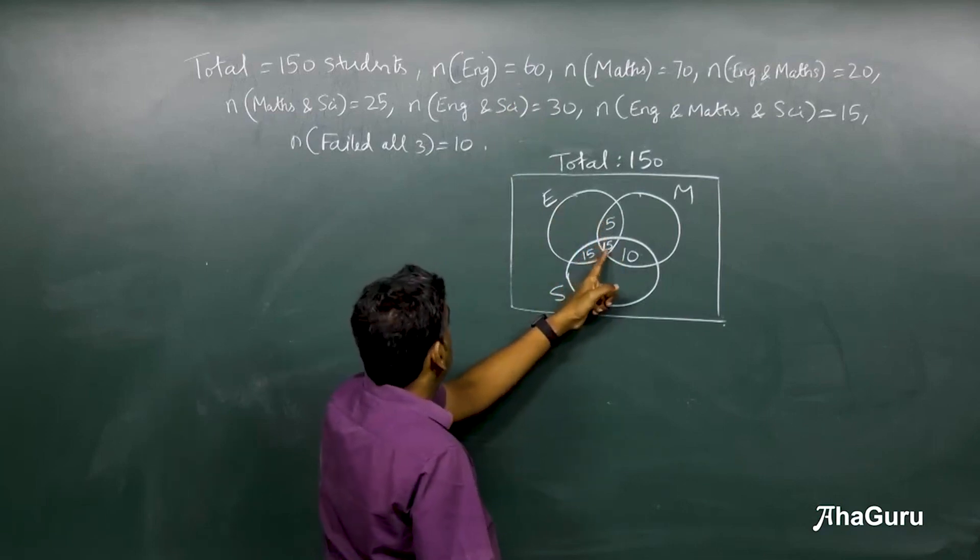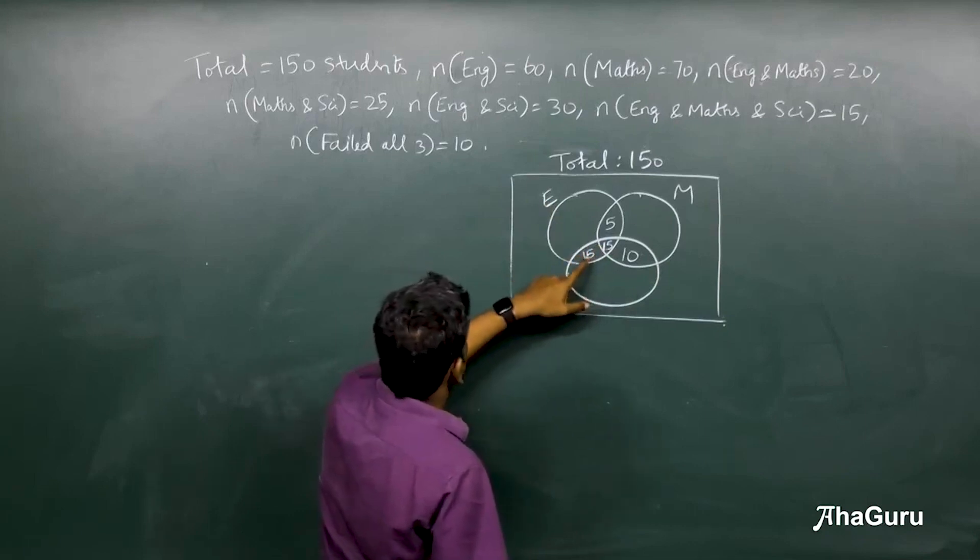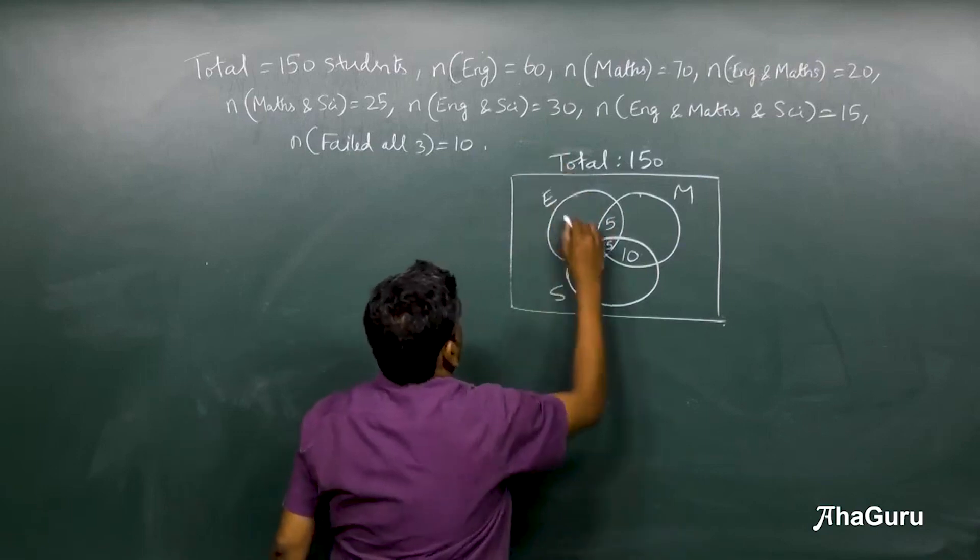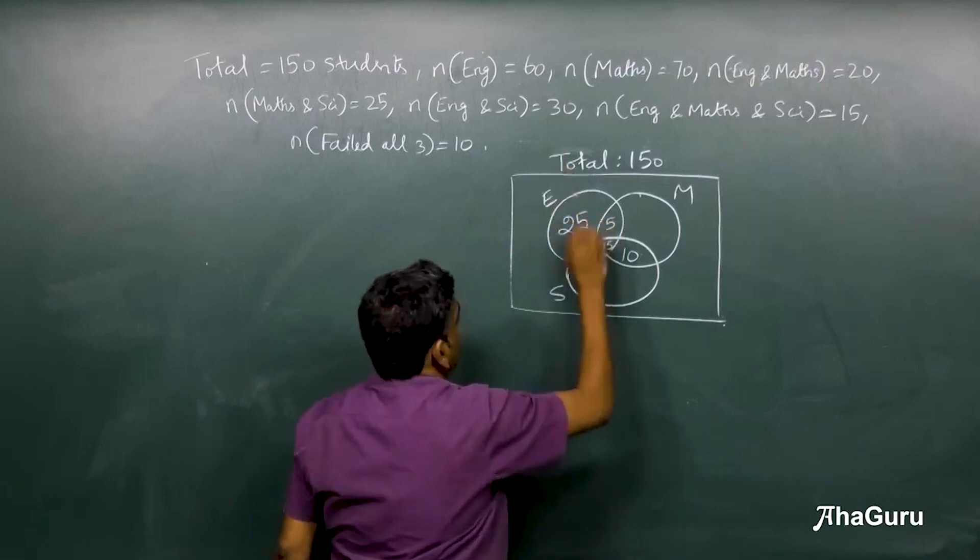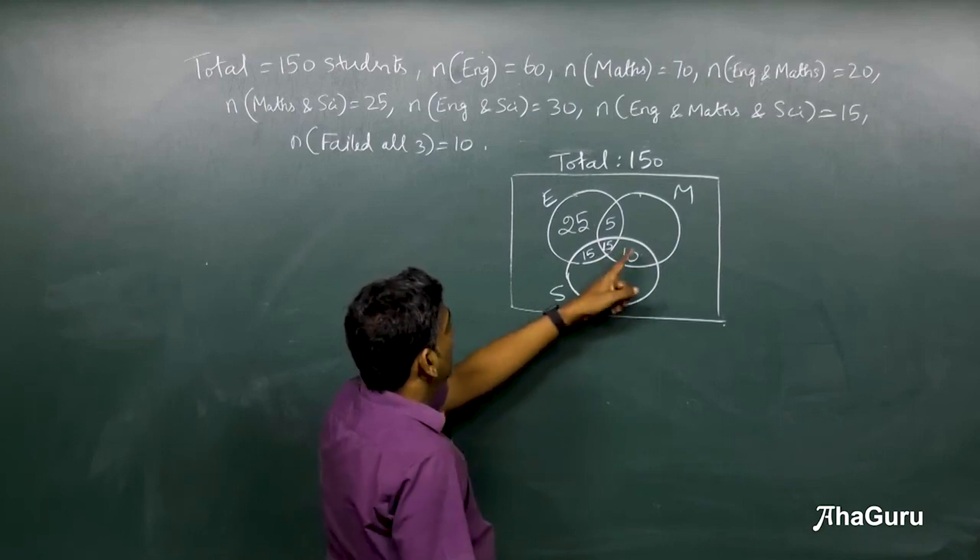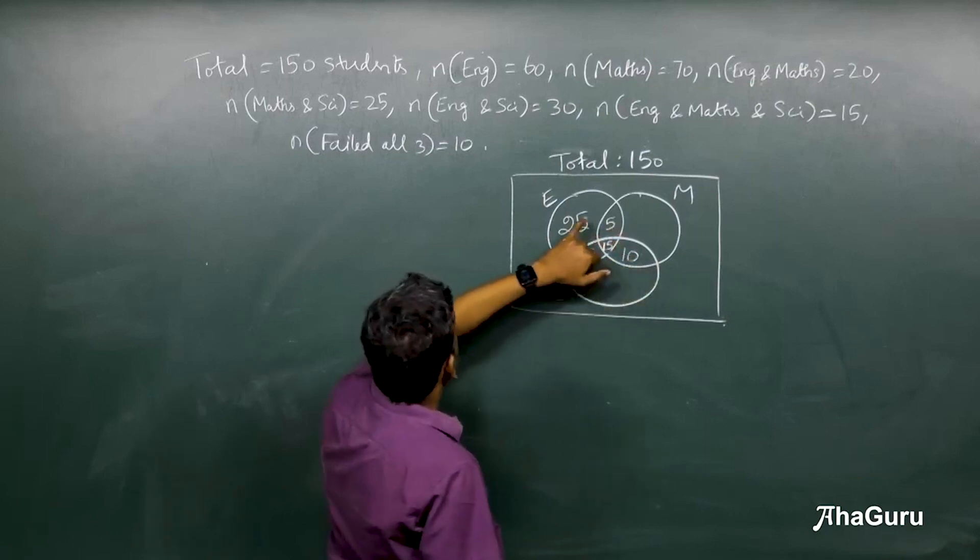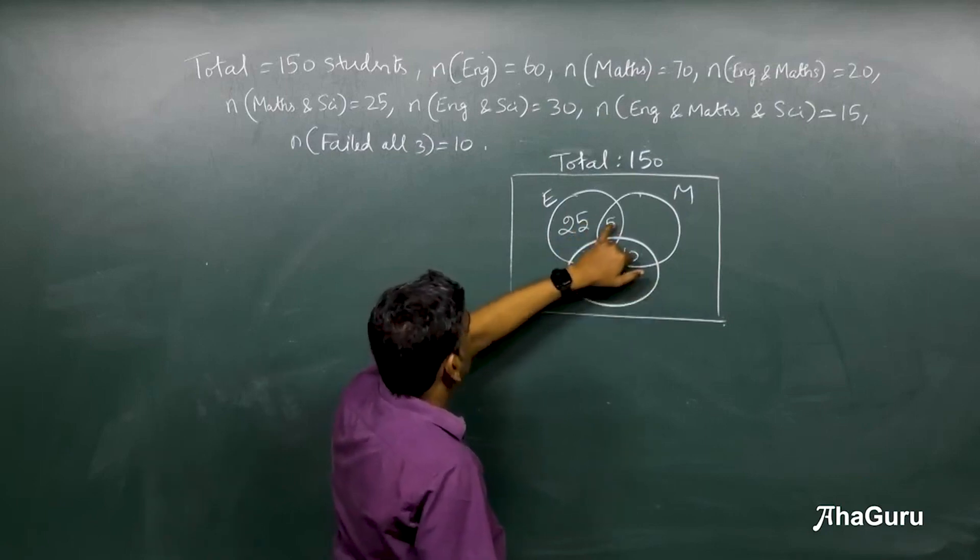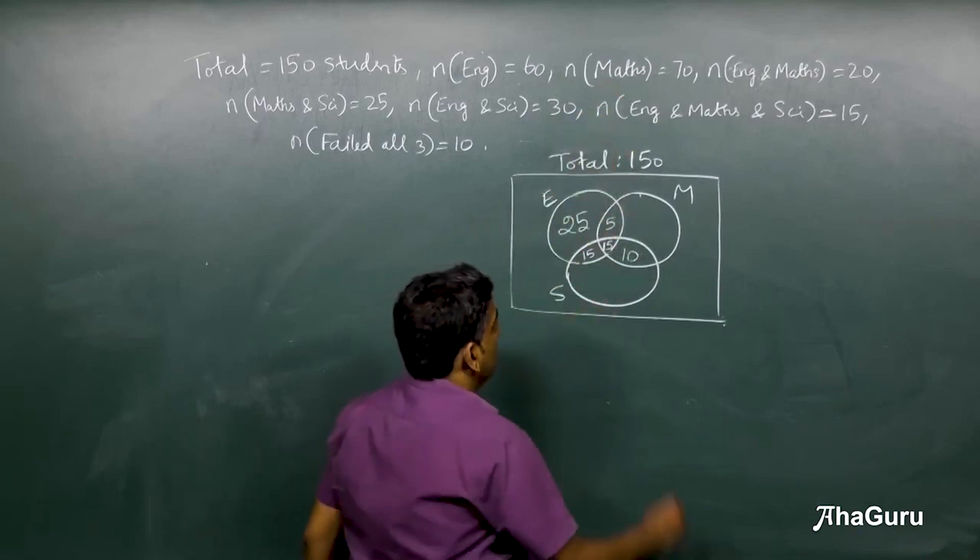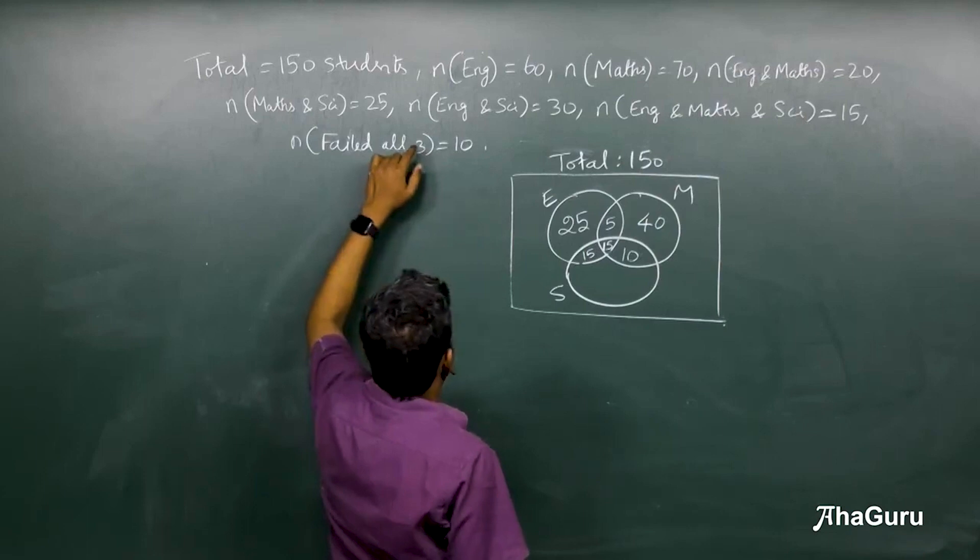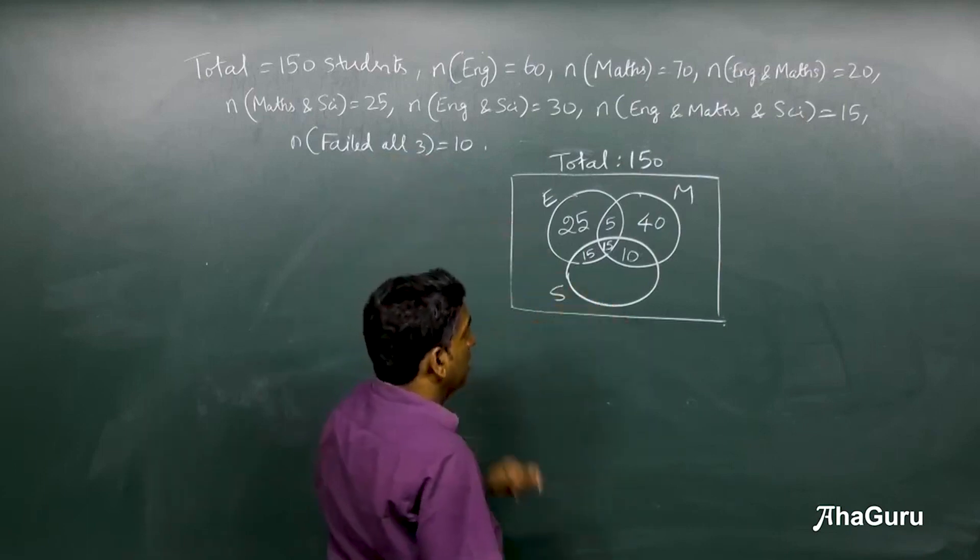Now let's look at English overall. We have total is 5 plus 15 plus 15, so 15 plus 15 is 30 plus 5 is 35. Total is 60, so this must be 25. The total in Math is 70, so this must be 40. And in Science we don't know that number.